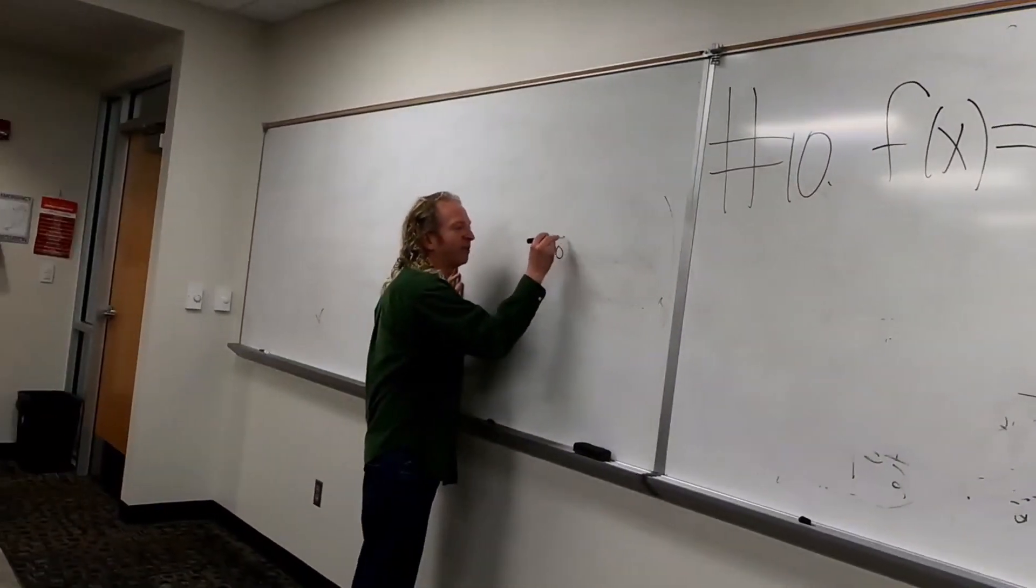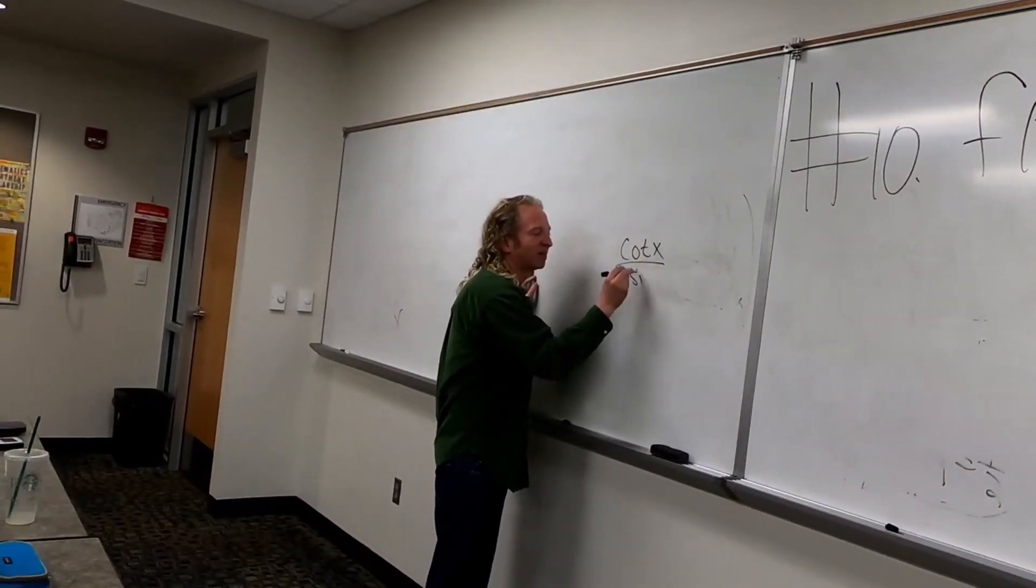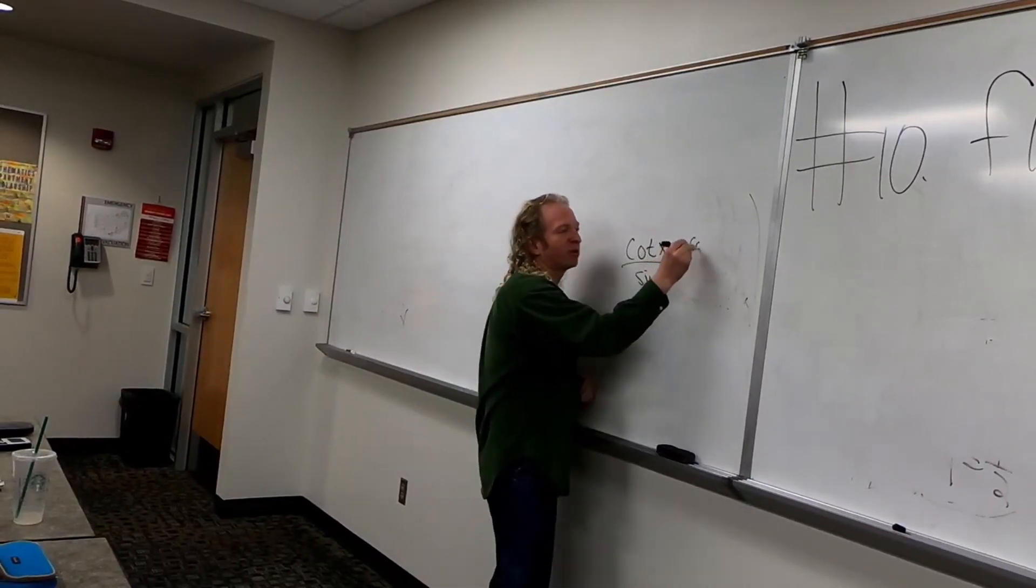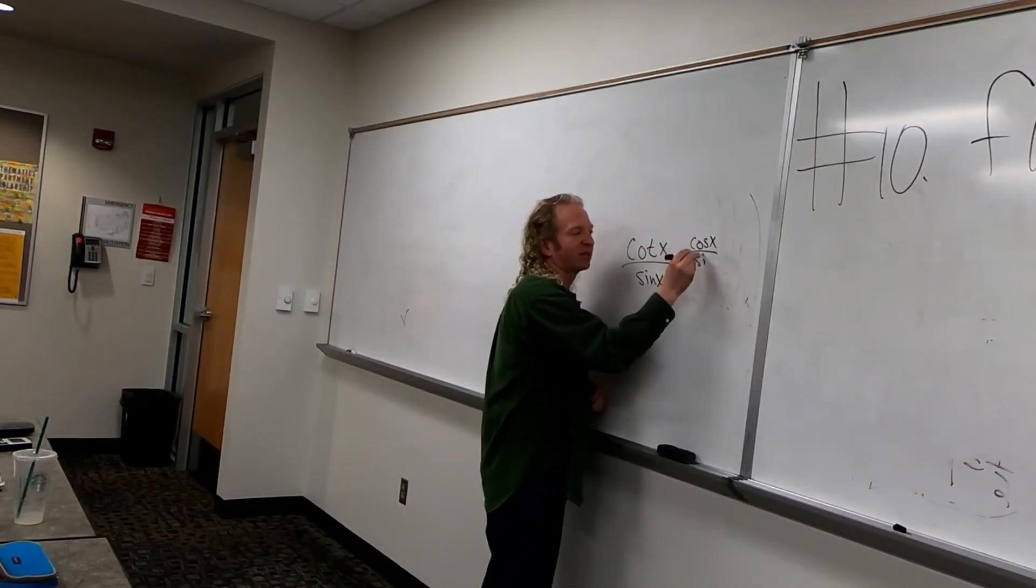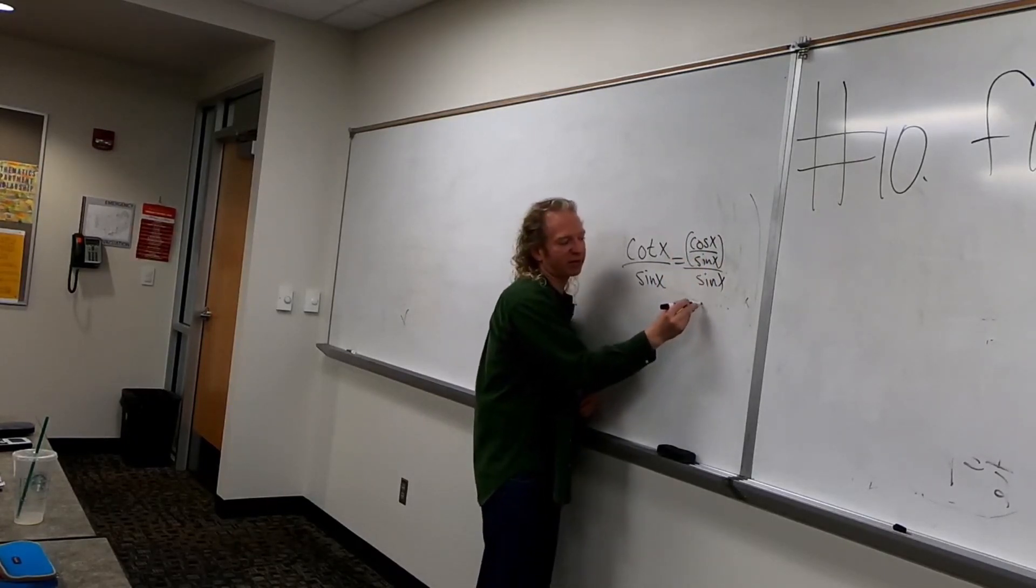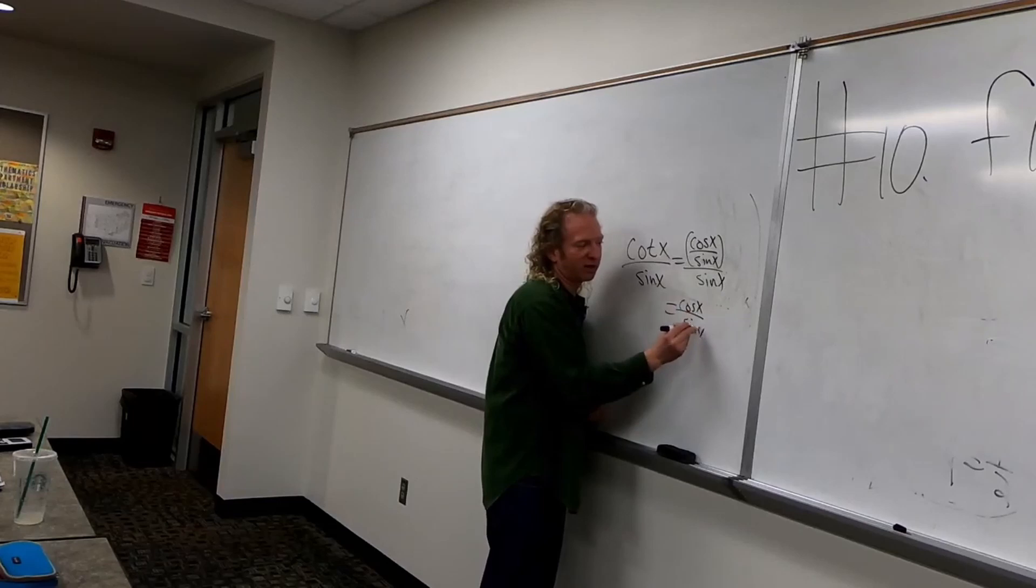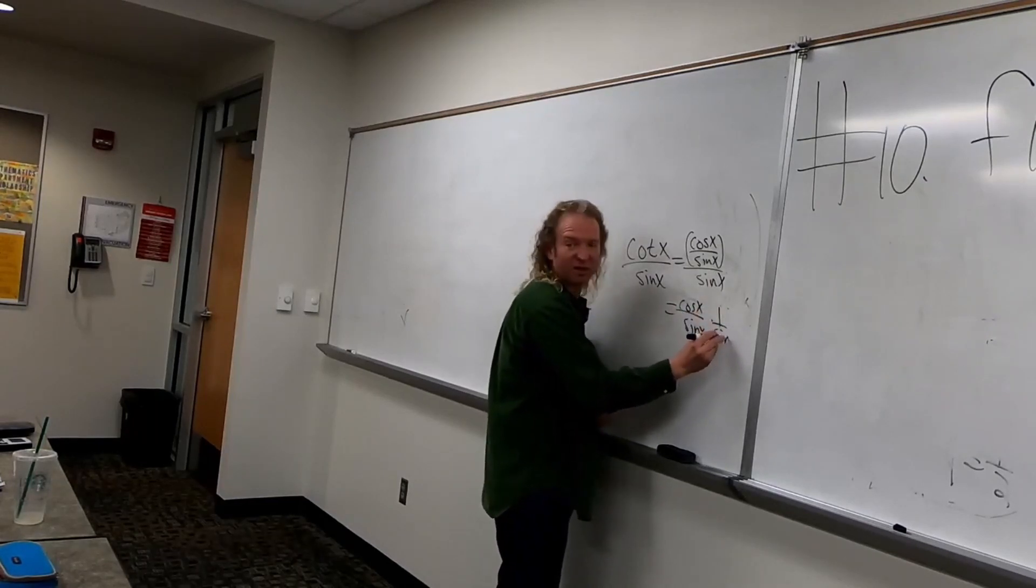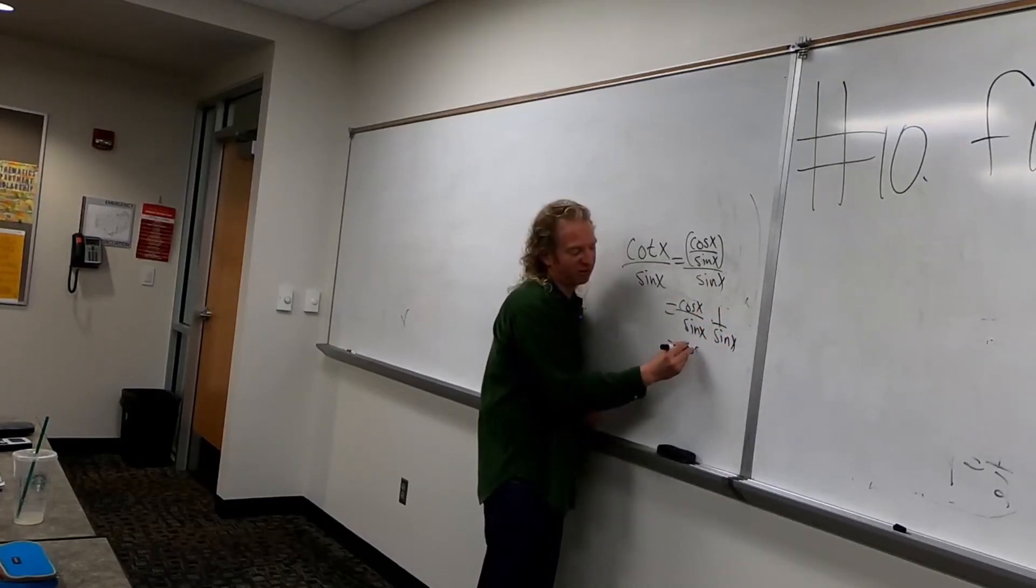Well, if you had, let me do it over here. If you have cotangent of x over sine x, if you write it as cosine x over sine x, let's just try it on the side, over sine x, that's the same thing as cosine x over sine x times 1 over sine x. So it becomes this.